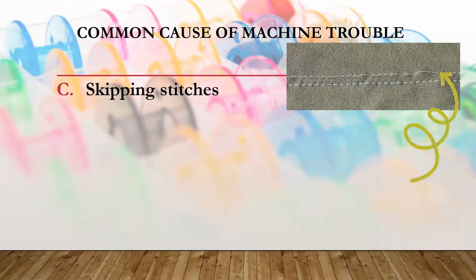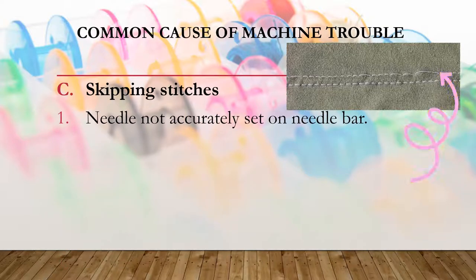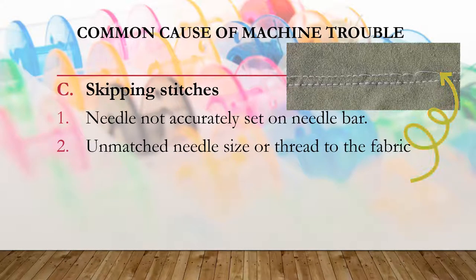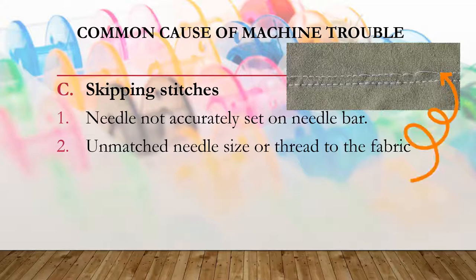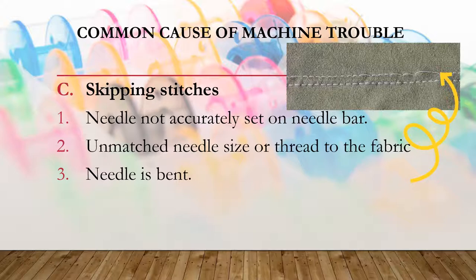Another sewing machine problem you can encounter is skipping stitches. Your needle may not be accurately set on the needle bar, causing skipping stitches. You should set your needle properly on the needle bar. Another cause is a mismatched needle size or thread to the fabric; the needle size and thread should correspond to the fabric you are sewing. If the needle is bent, you need to change it to avoid skipping stitches.